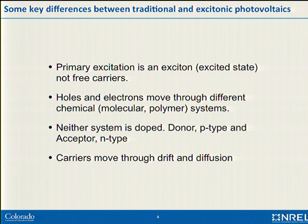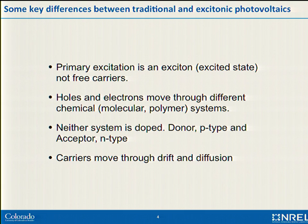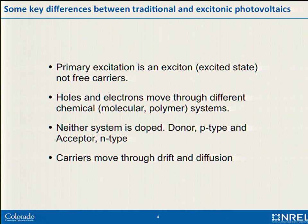The primary excitation in an OPV device, or even in a dye-sensitized solar cell, is an exciton — really an excited state — not free carriers. The holes and electrons in the system actually move through different materials. Neither component in our OPV device is doped. Even though we say N-type and P-type, we don't actually mean they're doped — what we mean is one transports electrons, the other transports holes. And our carriers move through both drift and diffusion.